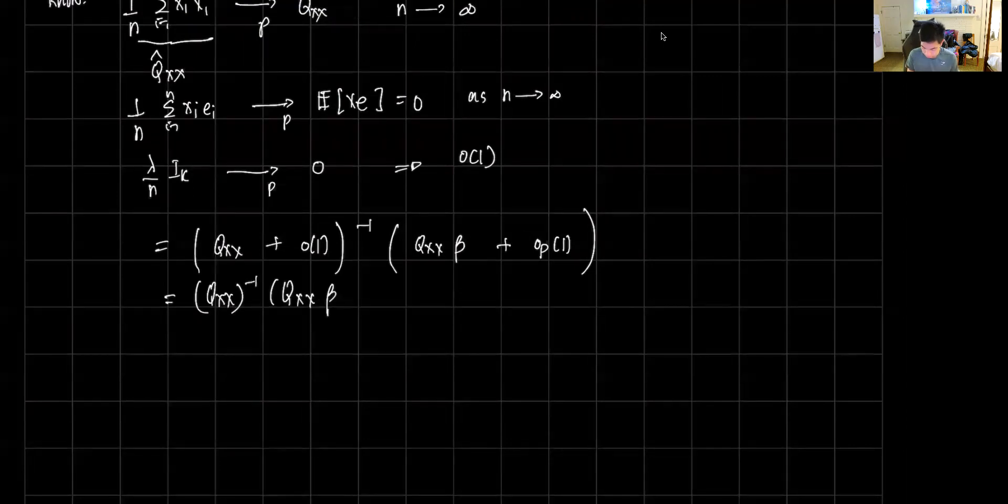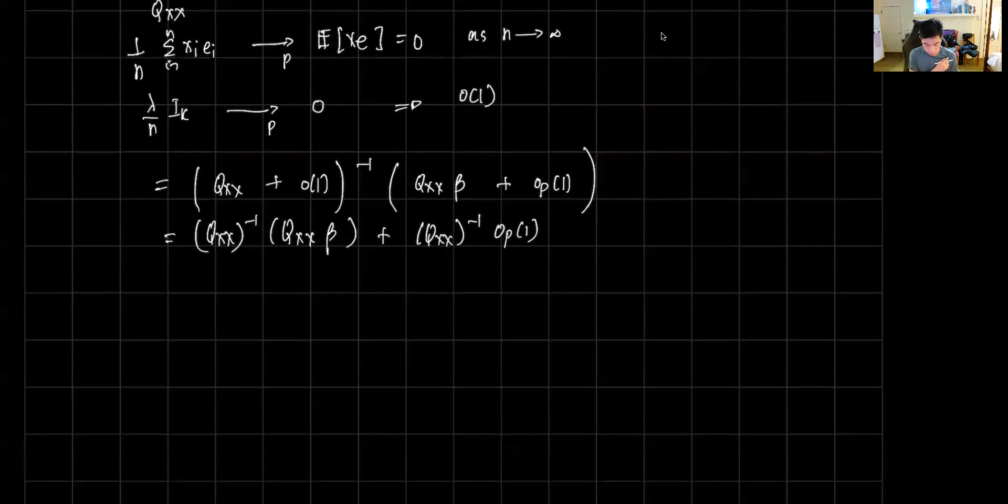And again, this term here will tend to 0, so that's just Q_xx inverse times Q_xx beta plus Q_xx inverse times o_p of 1. And we know from here, clearly these two will cancel out, so we're left with beta.